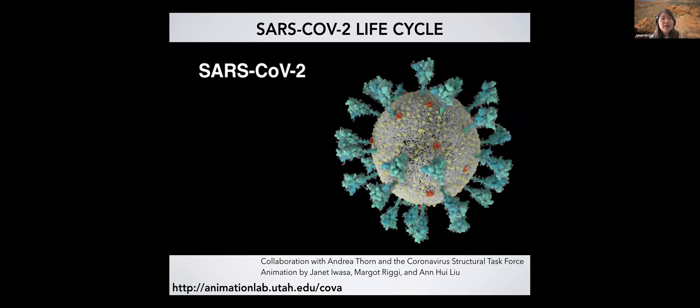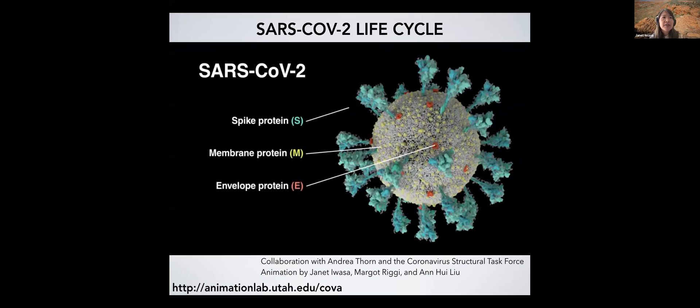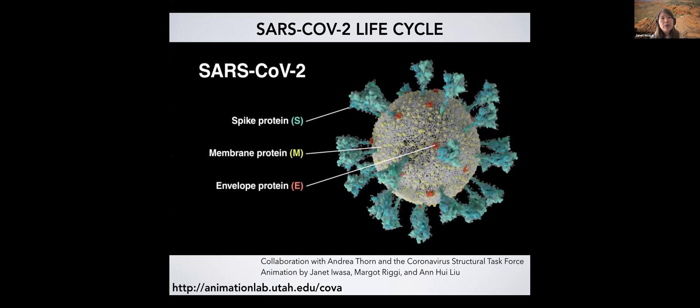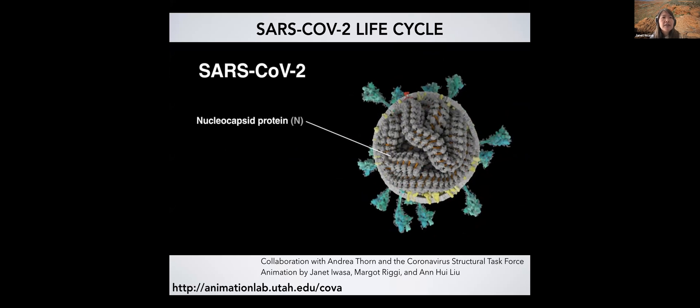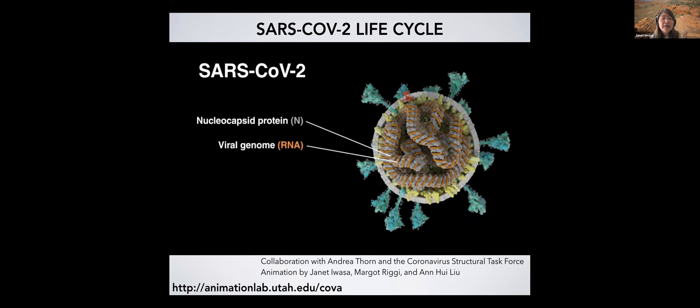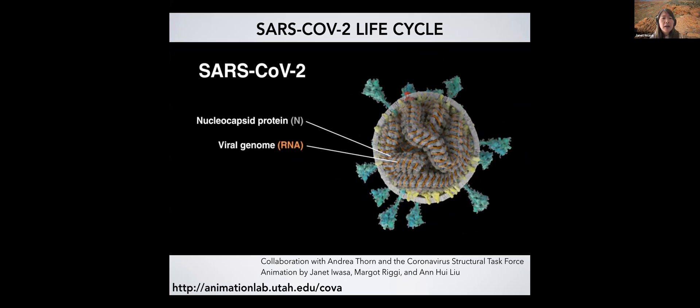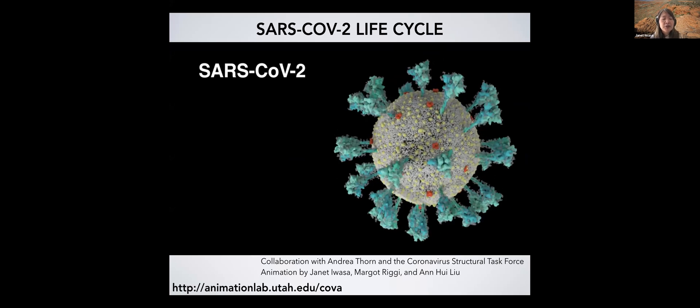So the first part of the animation focuses on sort of the anatomy of the virus, especially on the spike protein, which is shown in teal, kind of wiggling around there on the surface. Inside of the virus, we have the RNA, the viral RNA that's wrapped around nucleocapsid protein that's shown in gray.